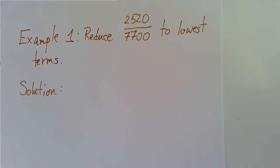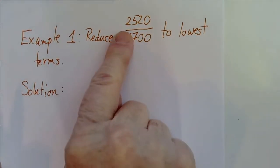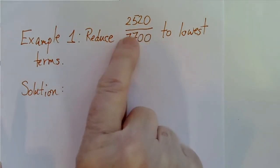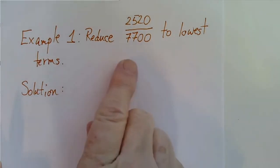Okay, let's look at example 1. We want to reduce 2,520 divided by 7,700 to lowest terms, which means we don't want any factors in common between the numerator and the denominator.